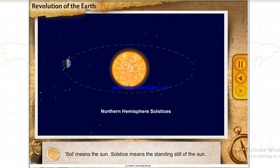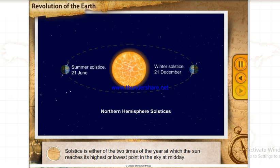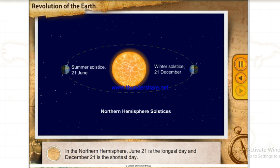Sol means the sun. Solstice means the standing still of the sun. Solstice is either of the two times of the year at which the sun reaches its highest or lowest point in the sky at midday. In the northern hemisphere, June 21st is the longest day and December 21st is the shortest day.